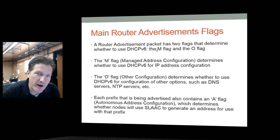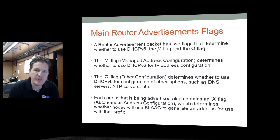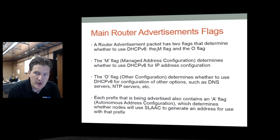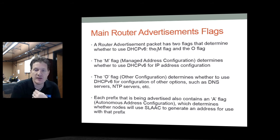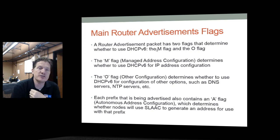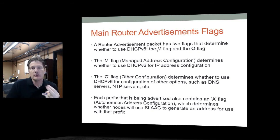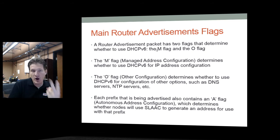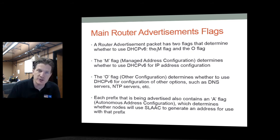The two flags that determine whether to use DHCPv6 are the M flag and the O flag. The M flag (managed address configuration) determines whether to use DHCPv6 for IP address configuration. The O flag (other) determines whether to use DHCPv6 for other options such as DNS and network time servers. Each advertised prefix also contains an A flag (autonomous address configuration) that determines whether the node should use SLAAC.